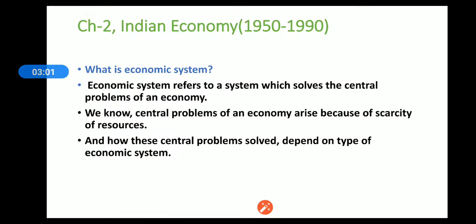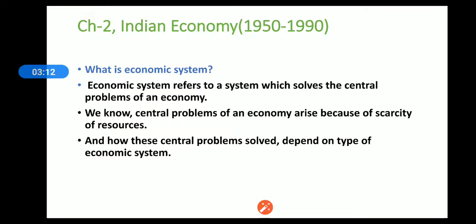Decisions about what to produce, how to produce, and for whom to produce — for example, whether to produce basic needs for poor people — are economic decisions. These are the central problems of an economy, and an economic system is what solves them.